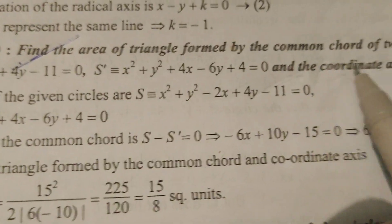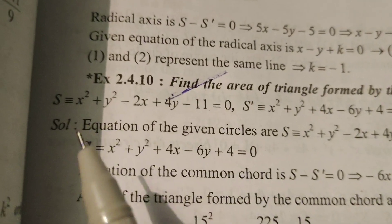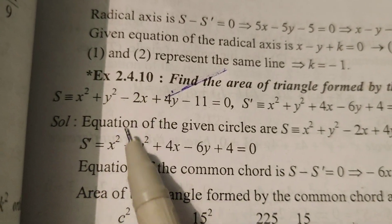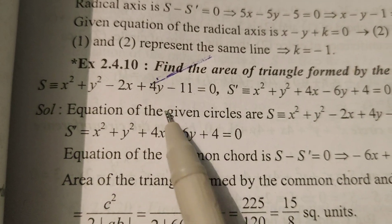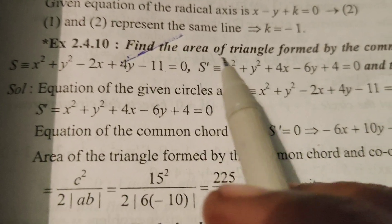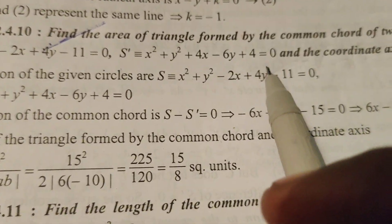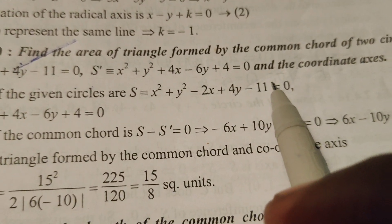Find the area of the triangle formed by the common chord of two circles: S equals x square plus y square minus 2x plus 4y minus 11 equals 0, and S dash equals x square plus y square plus 4x minus 6y plus 4 equals 0.